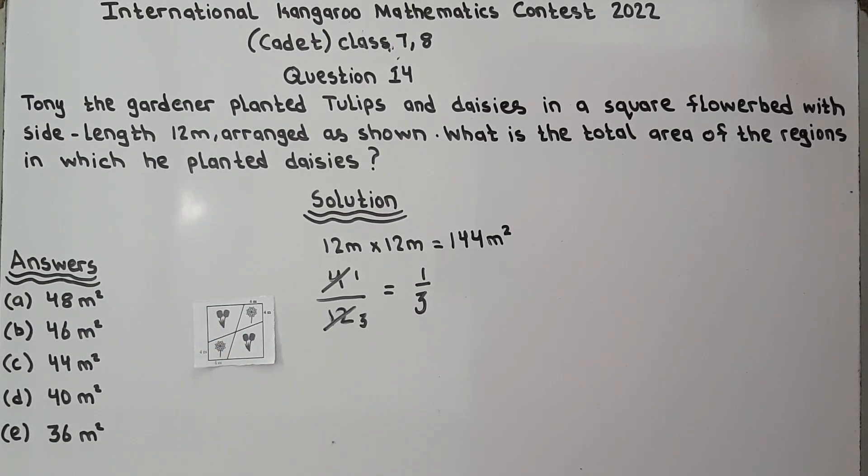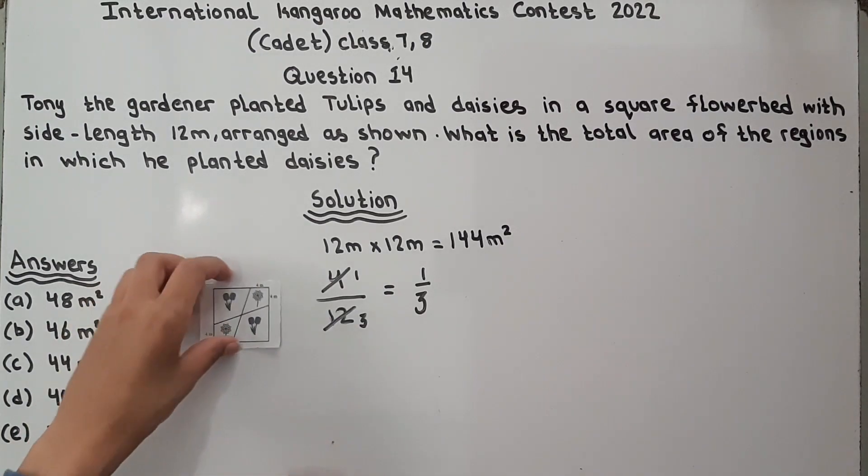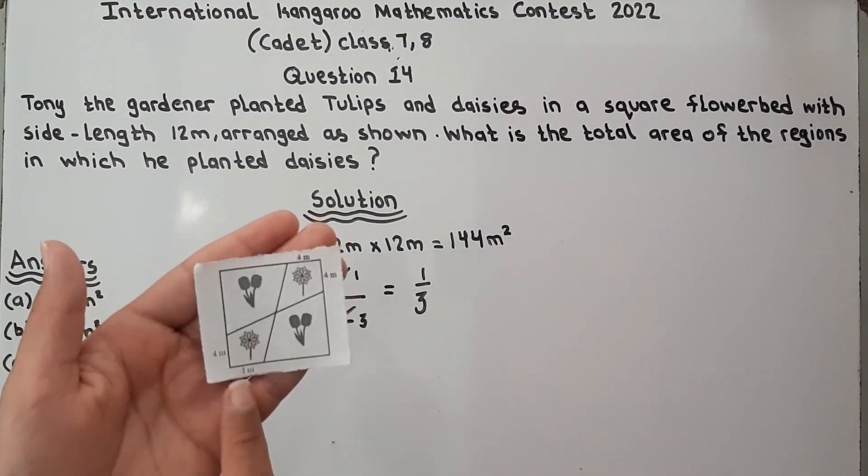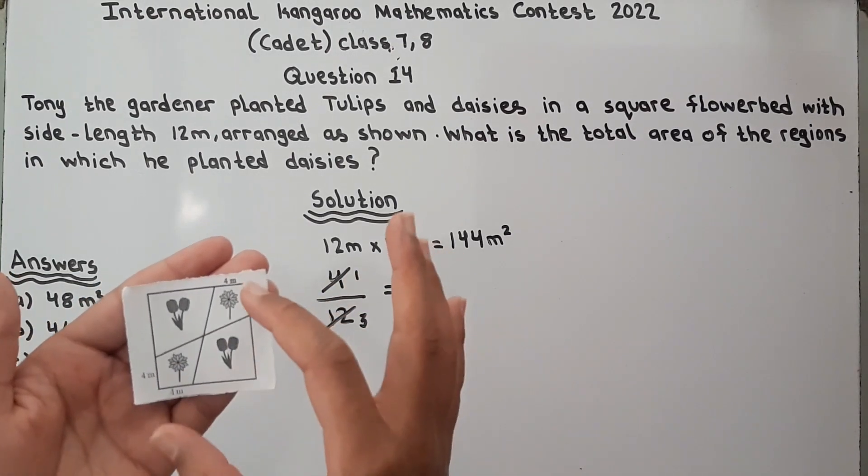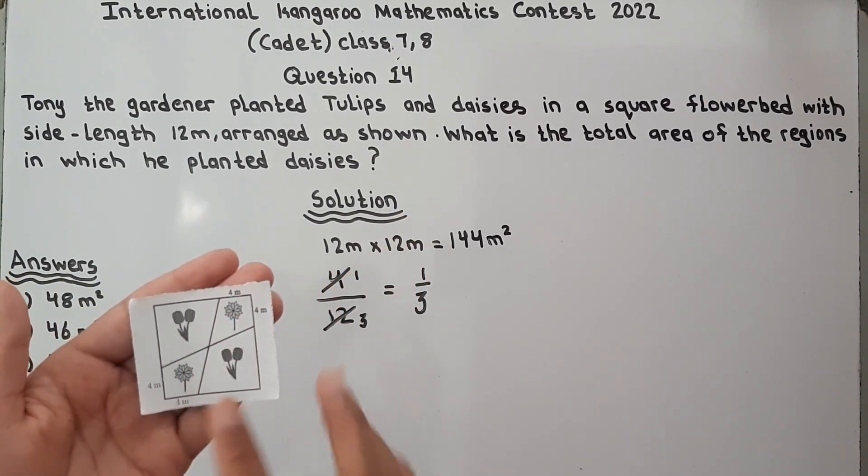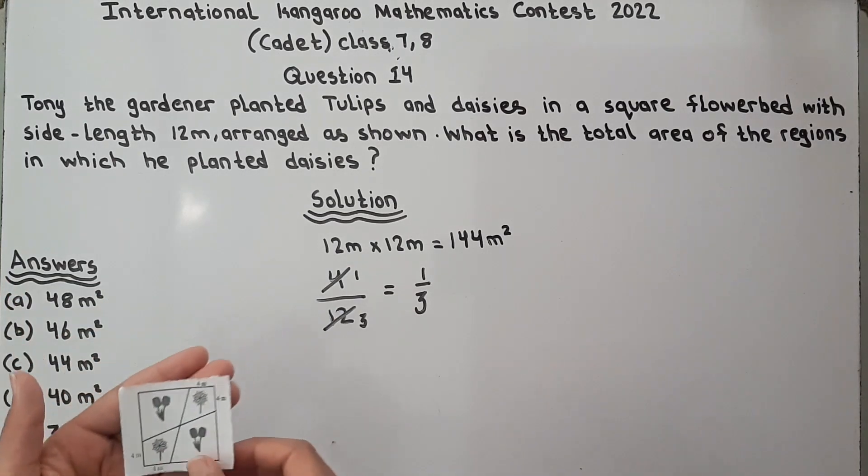Now 1 divided by 3, this is of this area. 1 divided by 3 is of this area. Now we have to find the region in which we planted is this region and this region. So we will find this.